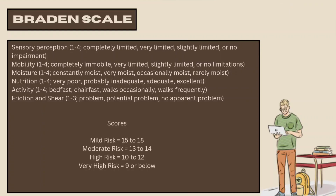The Braden Scale is used to calculate pressure ulcer risk in ICU or bedridden patients. It includes six parameters: Sensory Perception (1-4: completely limited to no impairment), Mobility (1-4: completely immobile to no limitations), Moisture (1-4: continuously moist to rarely moist), Nutrition (1-4: very poor to excellent), Activity (bed-bound to chair-bound), and Friction and Shear.